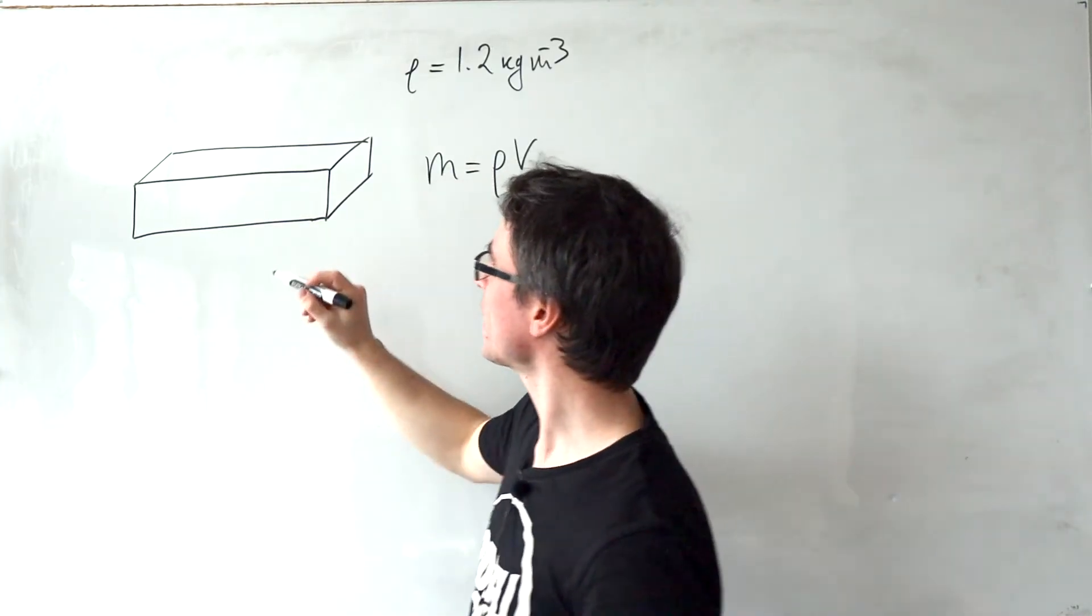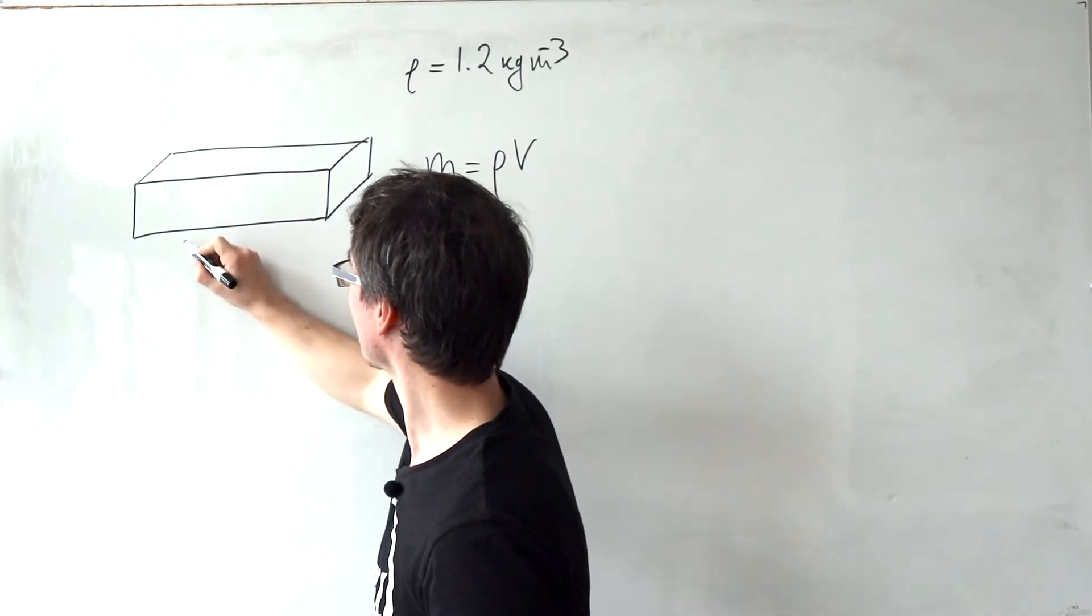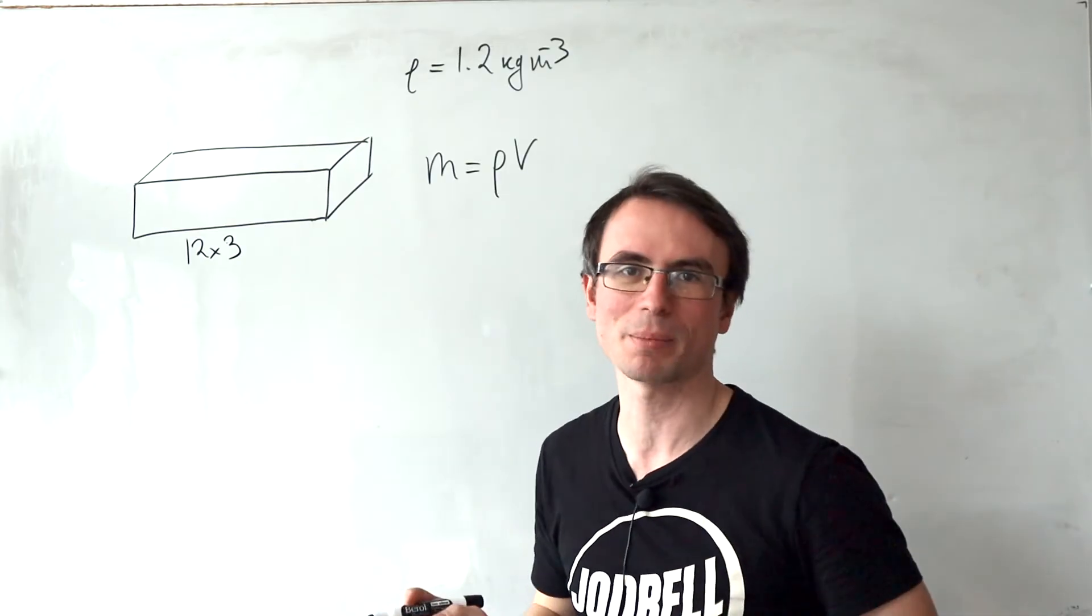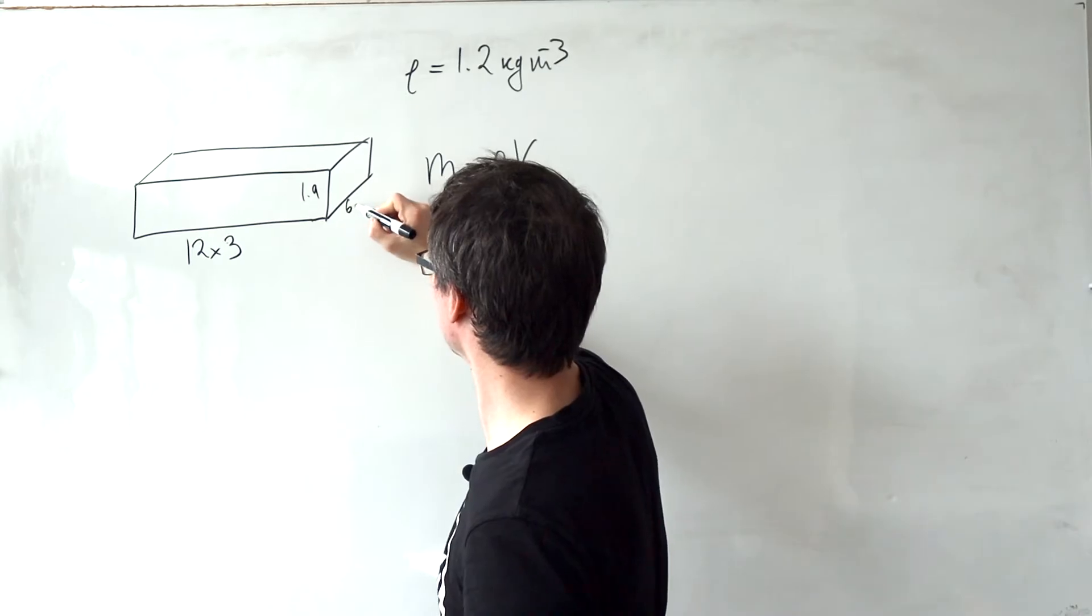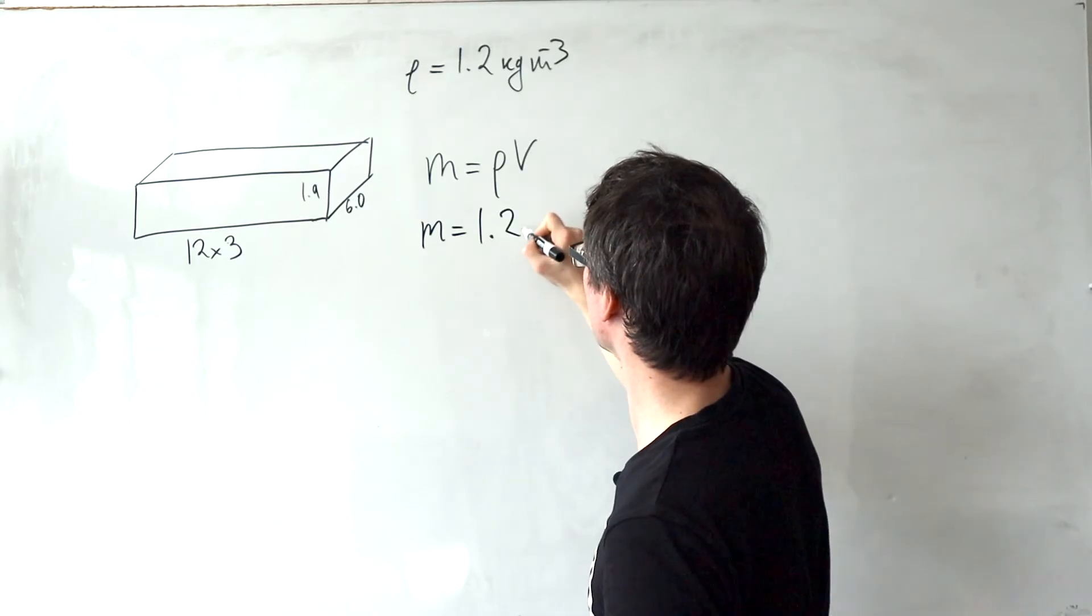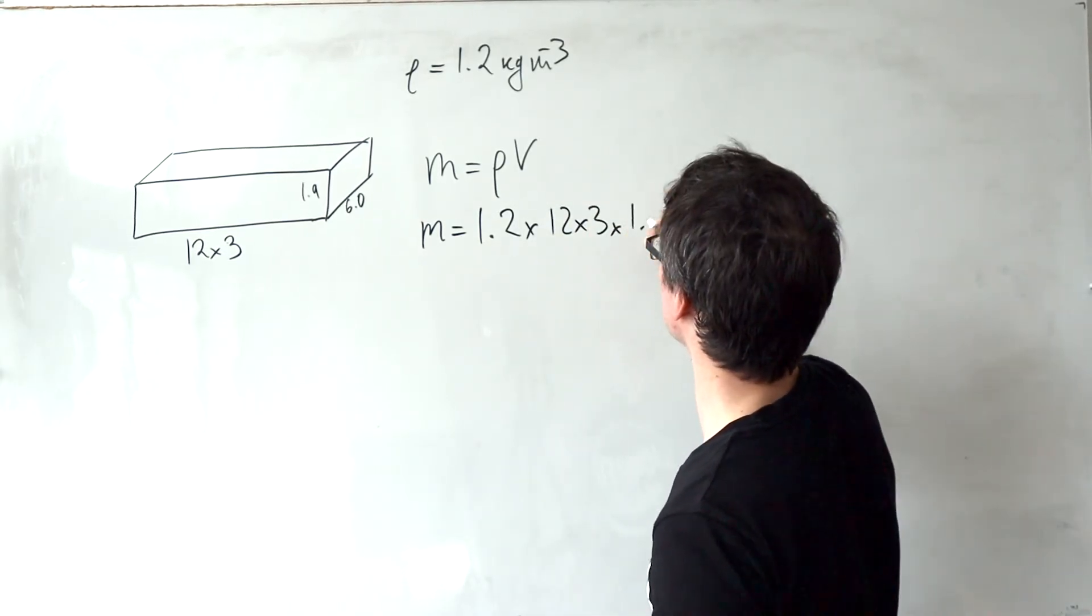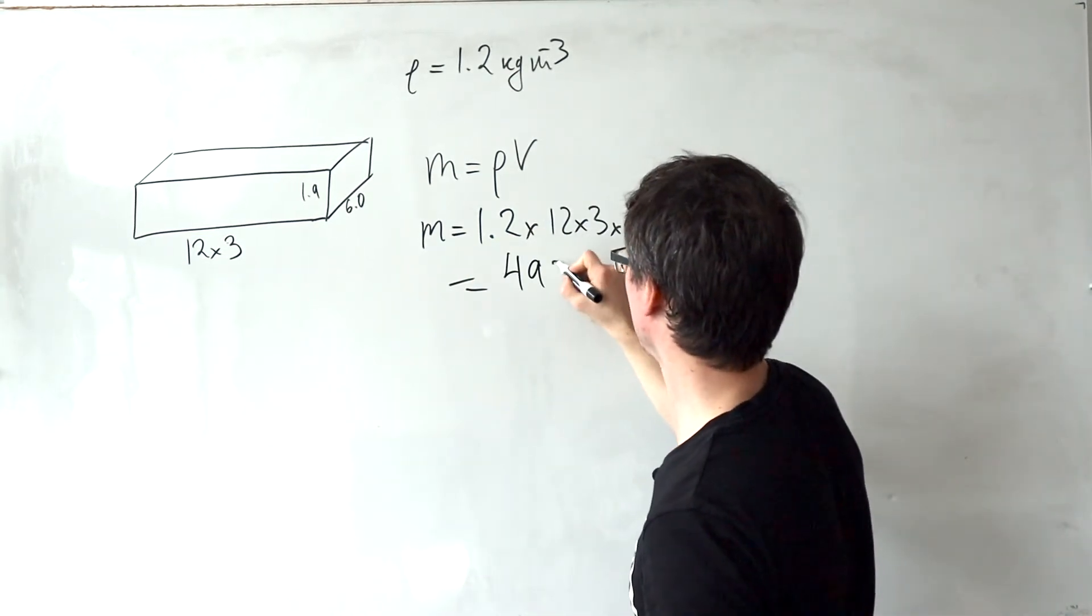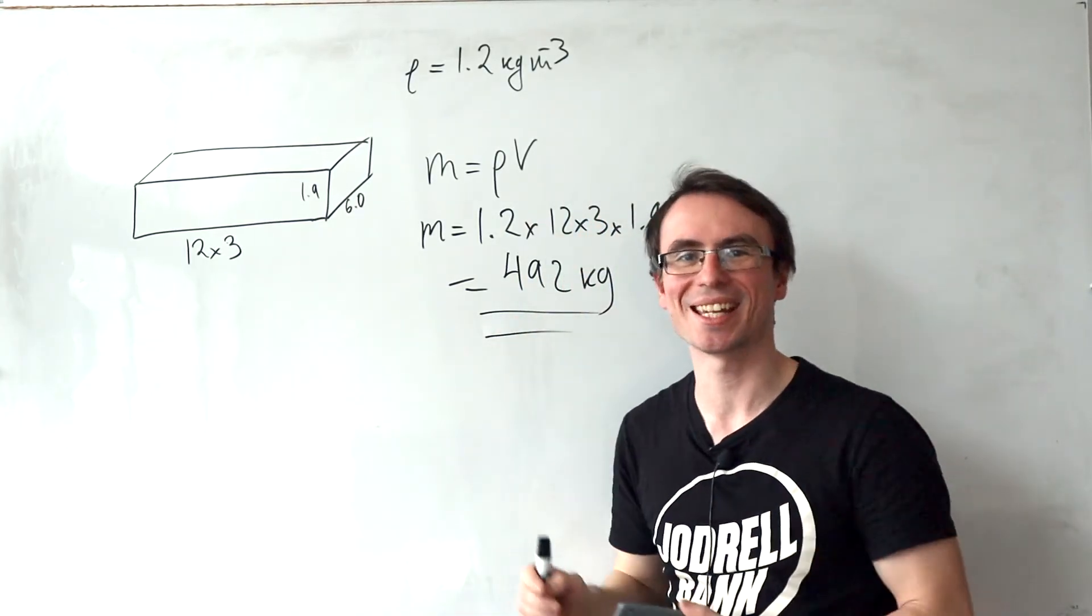So for this one, we're going to use that the mass is equal to the density multiplied by the volume. Now in three seconds, how much air will have traveled from here to here? Well, if the speed is 12 meters per second, then in three seconds, this length here will be just 12 times three, which is around 36 meters. In the question, we're also given that this here is 1.9 meters and this here is six meters. So we can directly calculate the mass using 1.2 times 12 times 3 times 1.9 times 6.0, which is around 492 kilograms of air which hits the tent in three seconds.